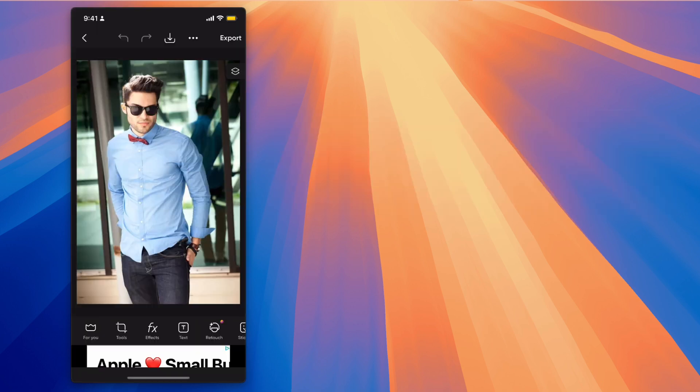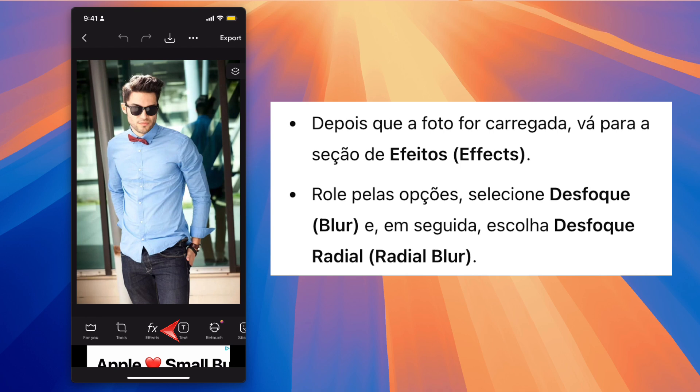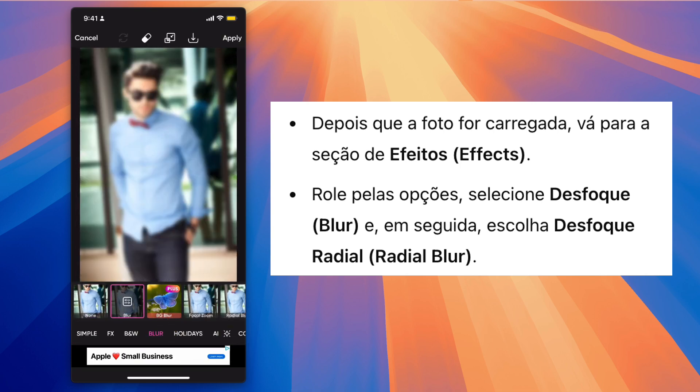Step 2. Once the picture is loaded, go to the effects section. Scroll through the options, select Blur, and then choose Radial Blur.